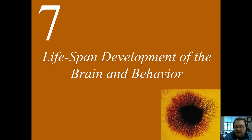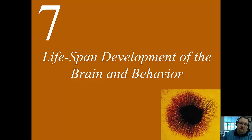Welcome back everyone. In the last video we talked about how new neurons are born, how they are produced and how they navigate the brain to where they're going to live. So now in this lecture we're going to talk about what happens from there: cell differentiation, apoptosis, forming connections, synapses in the brain, all of that good stuff.